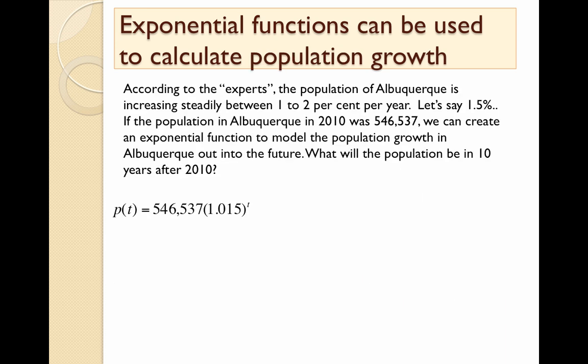Here's another example of population growth, this time people. In Albuquerque, according to the experts, the population is increasing steadily between one to two percent a year. Let's just call it one and a half percent. Starting with 2010, our base year when there was a census, we had 546,537 people in Albuquerque. We create an exponential function to model this, p(t).